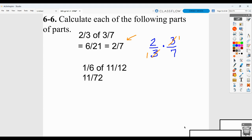Then we have another one, one-sixth of eleven-twelfths. Again, you can just multiply across and get eleven-seventy-seconds, eleven over seventy-two.